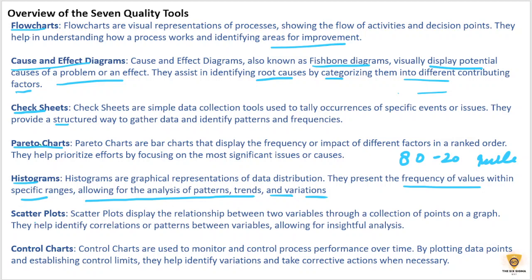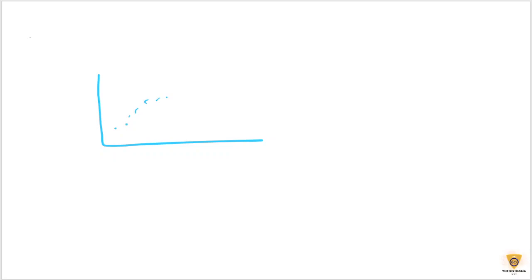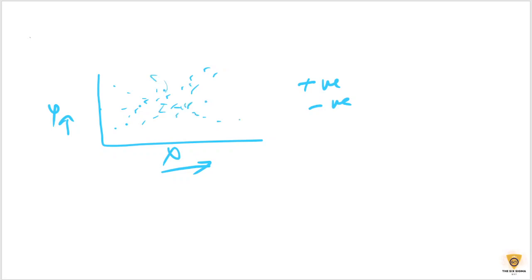Scatter plots are used to display the relationship between two variables. For example, if x is increasing and y is also increasing, that is a positive correlation. If x increases and y decreases, that is a negative correlation. And if the data points are haphazard with no clear pattern, there is no correlation.